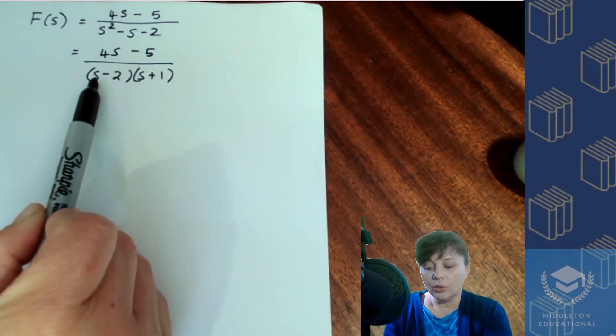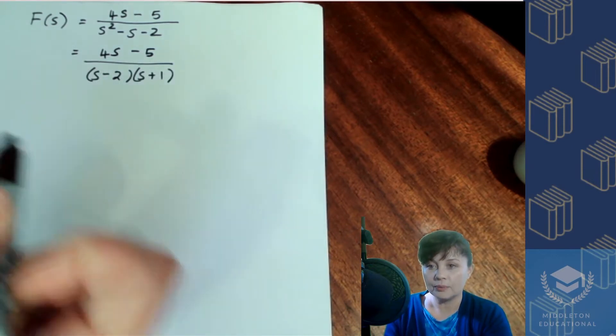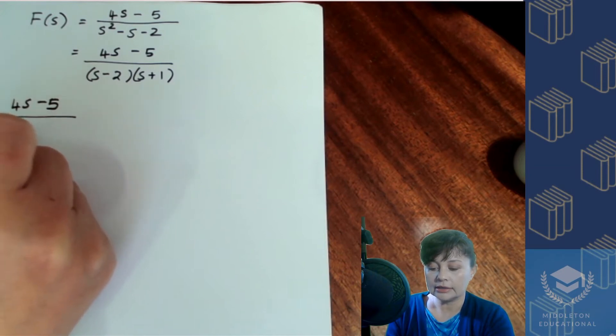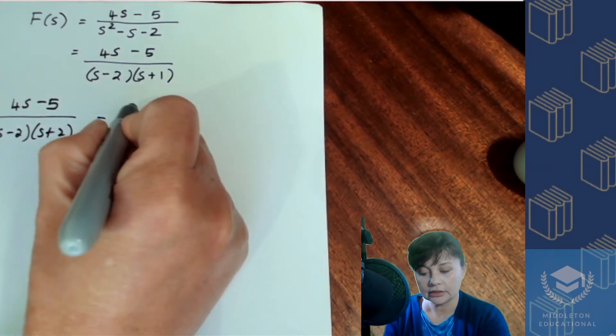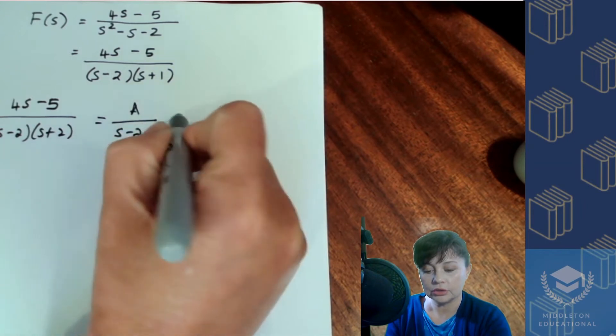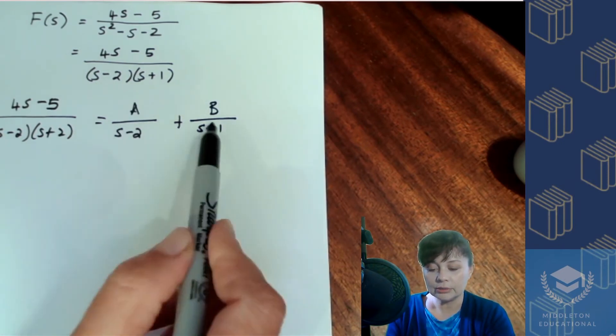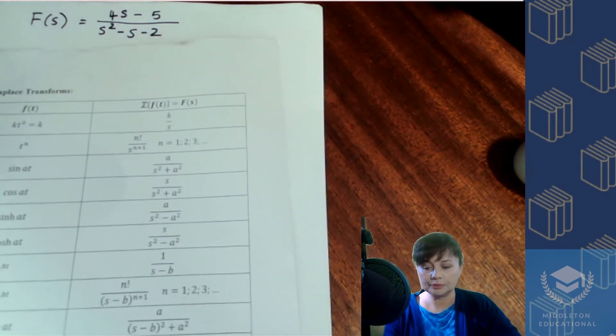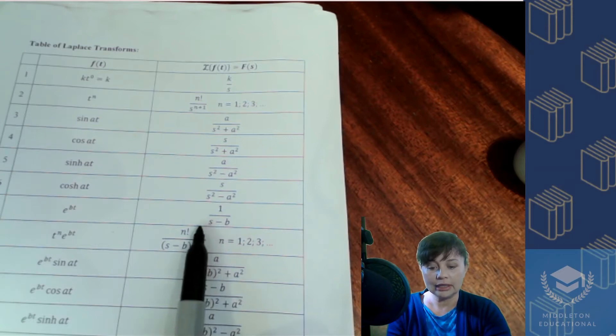Now, we can now split up this denominator using partial fractions because we know that if we write out 4s minus 5 over s minus 2, s plus 1, that is equal to a over s minus 2 plus b over s plus 1. And if you look at these two terms here and you look at your denominator and you check on your table, you'll see that the denominator is the same as the denominator on number 7 because you've got two different terms there.